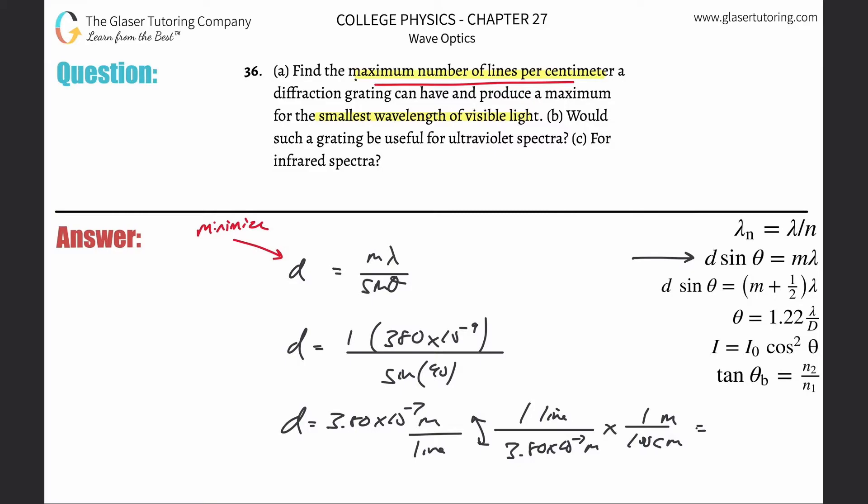Now go about and do this calculation. So this is basically now 1 divided by parentheses 3.80 times 10 to the minus seventh times 100, close those parentheses, and there's your answer. This is about 2.63 times 10 to the fourth lines per centimeter.